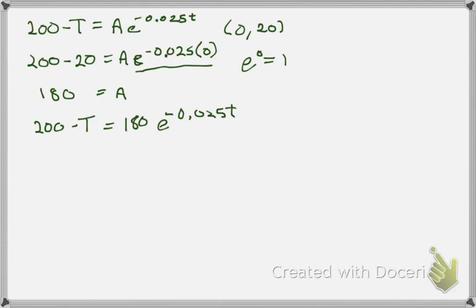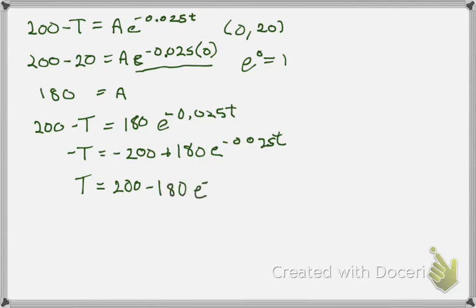Well, we're used to seeing our equations solved for T. So I'm going to go ahead and first solve for negative T and then we'll finish it off. So subtract 200 off of both sides, we get negative T equals negative 200 plus 180 E to the negative 0.025T, and then multiply through by a negative just to get this equal to a positive T and something we can plot if we choose to. So T equals 200 minus 180 E to the negative 0.025T, and there it is the unique solution to our initial value problem. Thank you.